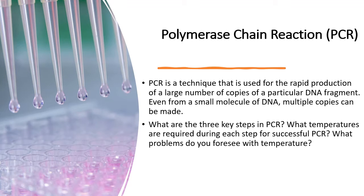Now let's move to the second process: the polymerase chain reaction, or PCR. PCR is used to multiply the number of copies of a DNA fragment. For example, if you want to genetically modify a bacterial cell by inserting a gene from yeast, you can't just isolate one copy of the gene. You need to make many copies so that you can transform as many bacterial cells as possible to achieve the results you want — and that is what PCR does.